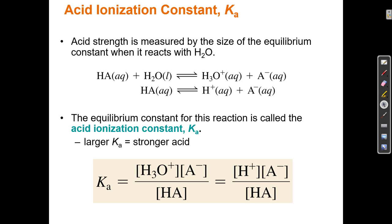Ka is the equilibrium constant for acids. For the reaction: acid + water → H3O+ + A-, Ka = [H3O+][A-] / [HA]. Water is a pure liquid and doesn't figure into the equation. We call it Ka because we're talking about acids, but we could just call it K — it's the same thing.